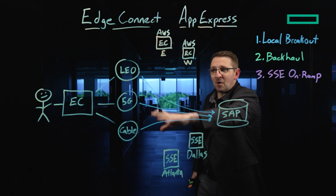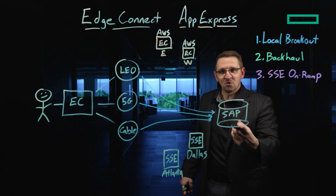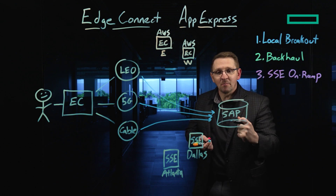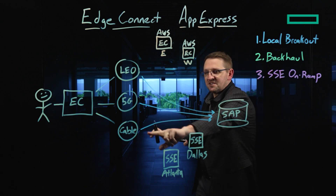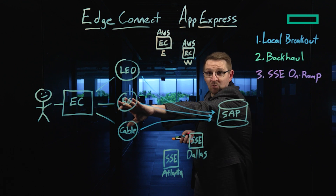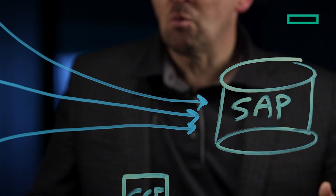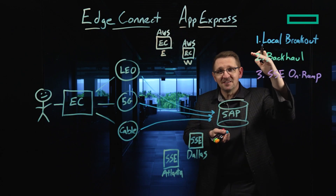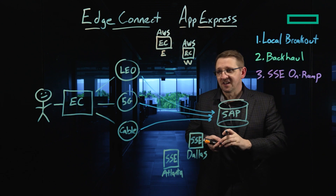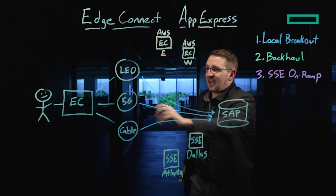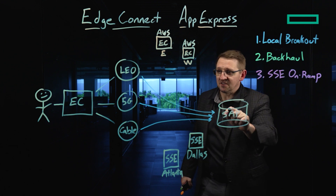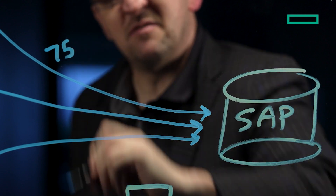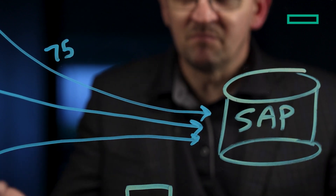Each one of these polling paths will carry a score. The EdgeConnect uses a mechanism called AppEx to calculate a number for each one of these paths from the branch office to the SAP server. That score comes in the form of a number between zero and 100 — the higher the number, the better the connection quality. For example, the EdgeConnect begins synthetically polling across the Starlink or LEO connection and maybe it scores out at a 75, which is decent but not great.